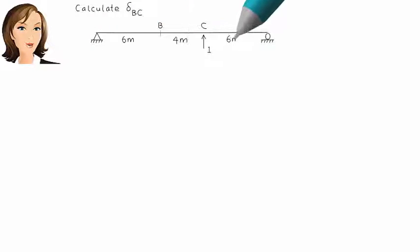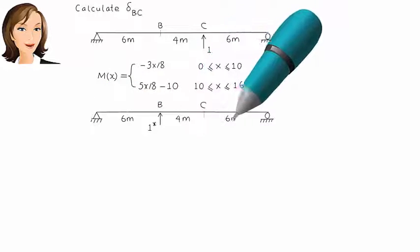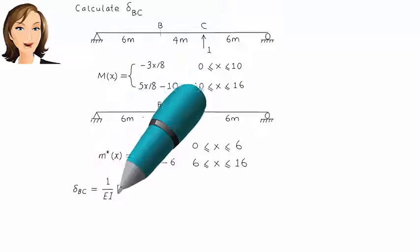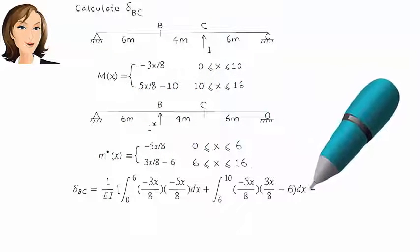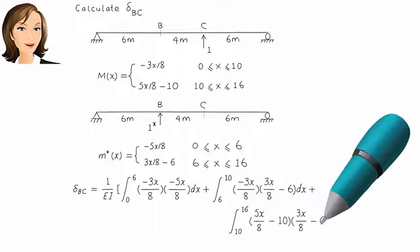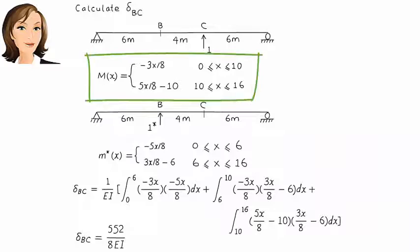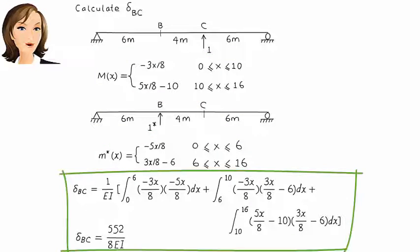Next, we determine delta B,C — the vertical displacement at B due to a vertical unit load placed at C. In this case, M and M star are not the same since the real load and the virtual load are applied at different locations. Here is M, here is M star, and here is the integral of M times M star.